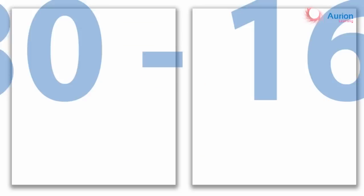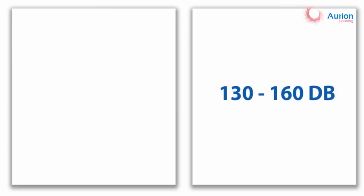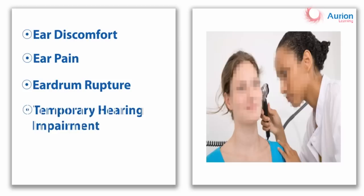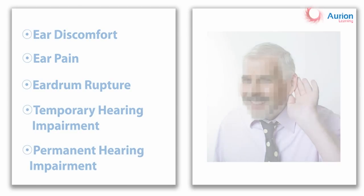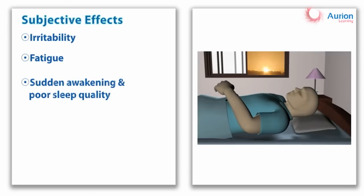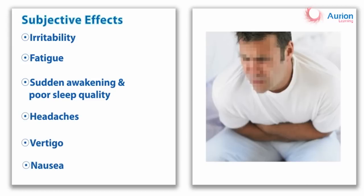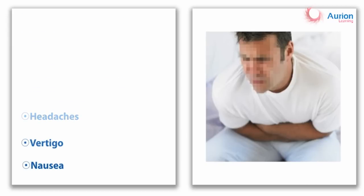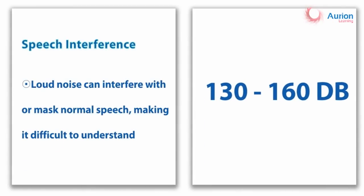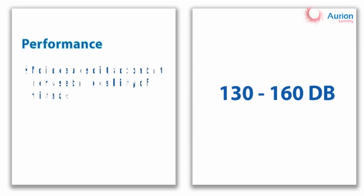Any guesses what is the decibel level of a jet engine taking off? 130 to 160 dB. Exposure to such high decibel levels for such long periods results in various problems: physiological, which is discomfort in the ears, eardrum rupture, and even permanent hearing impairment; psychological, such as irritability, fatigue, poor sleep quality, headaches, vertigo, and nausea.